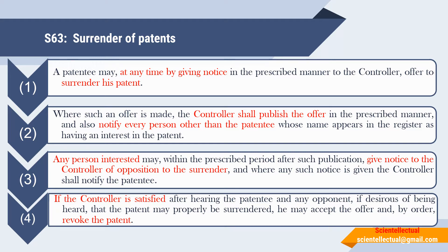Subsection 4: If the controller is satisfied, after hearing the patentee and the opponent if desirous of being heard, that the patent may properly be surrendered, he may accept the offer and by order revoke the patent. That is, once the controller is satisfied after hearing both the patentee and any opponent to the surrender, he will pass an order and revoke the patent.